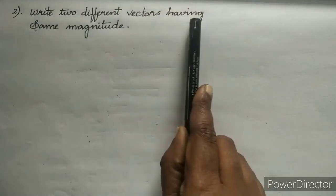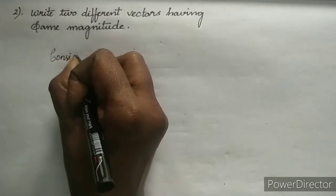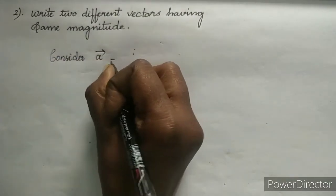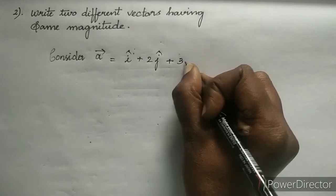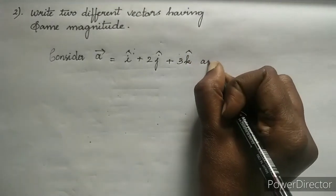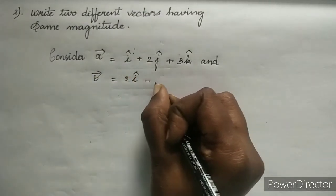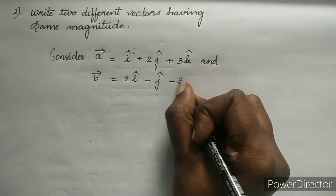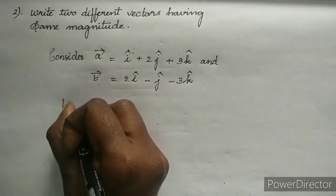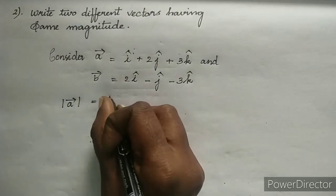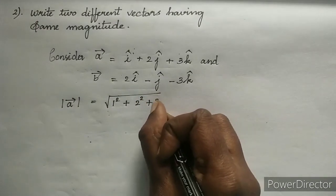Question number 2: write 2 different vectors having the same magnitude. Let us consider the vector A vector as I cap + 2 J cap + 3 K cap, and B vector as 2 I cap − J cap − 3 K cap. Let us find the magnitude for A vector and B vector.